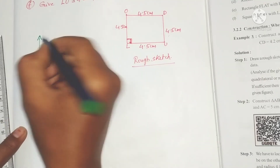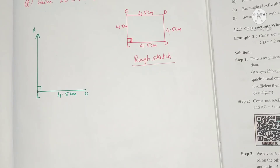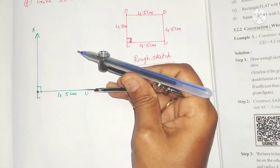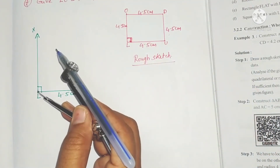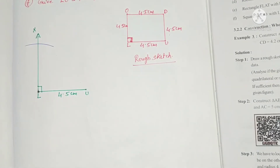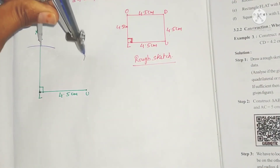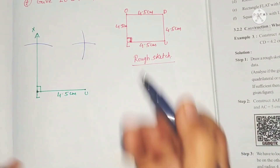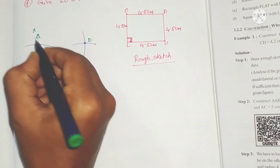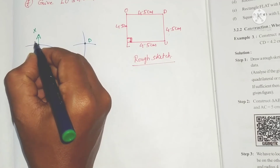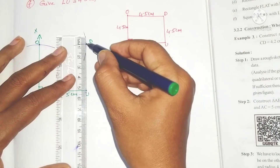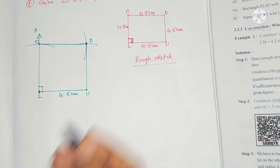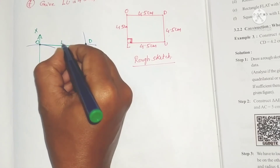Draw a right angle at L and draw a ray. All four sides are 4.5 centimeters. With L as center, draw an arc of radius 4.5 centimeters to mark point O on the ray. With the same radius, draw another arc from O and from U. The point of intersection is D.